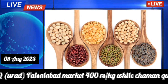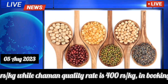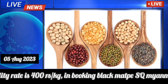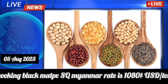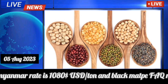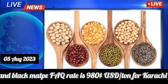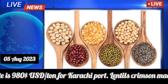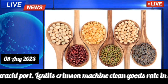Black mape Chaman quality rate is 400 rupees per kilogram in booking. Black mape SQ Myanmar rate is 1080 USD per ton, and black mape FAQ rate is 980 USD per ton for Karachi port.